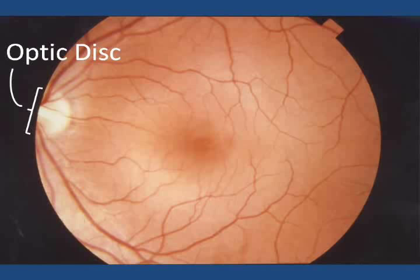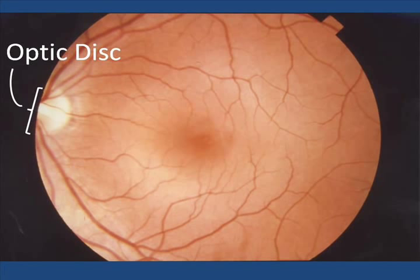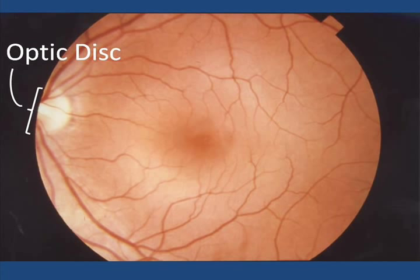This is a photograph of a small portion of the back wall of the eye. To the left is the optic disc, the area where the optic nerve enters the back wall of the eye.